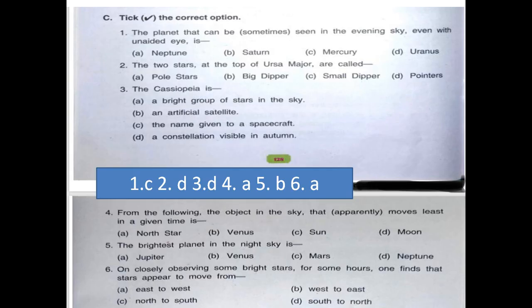Next one is tick the correct option. Question and there are four options. And first one is, the planet that can be sometime seen in the evening sky even with the unaided eye. Options are Neptune, Saturn, Mercury and Venus.